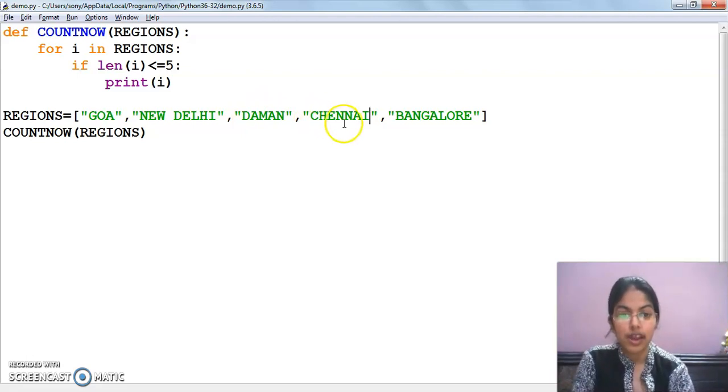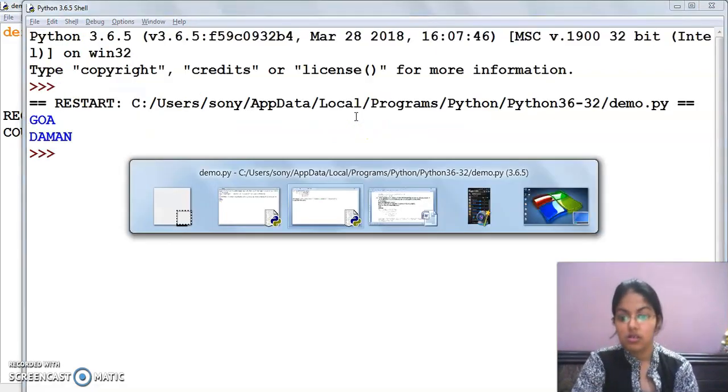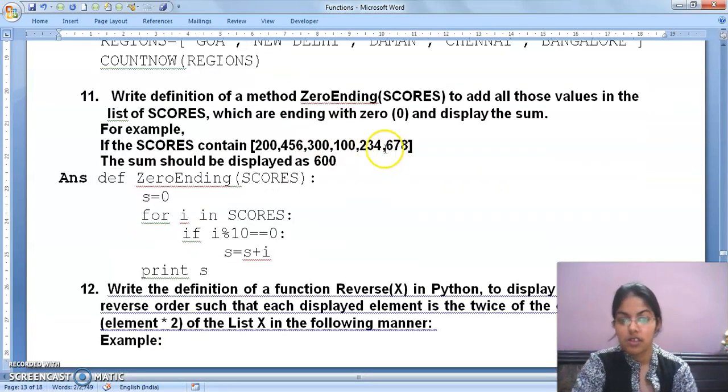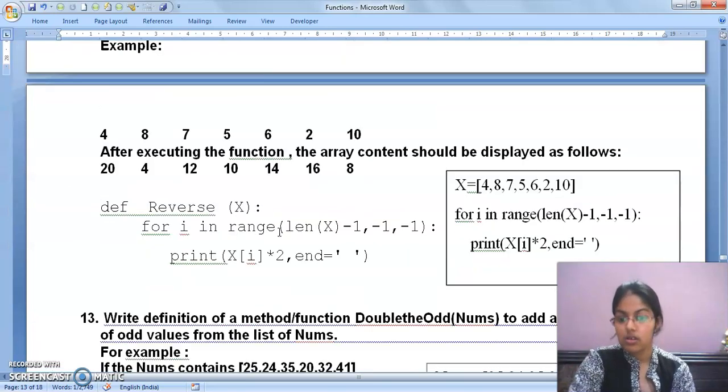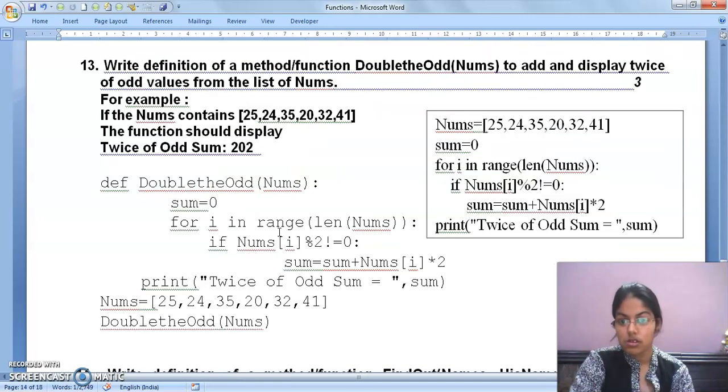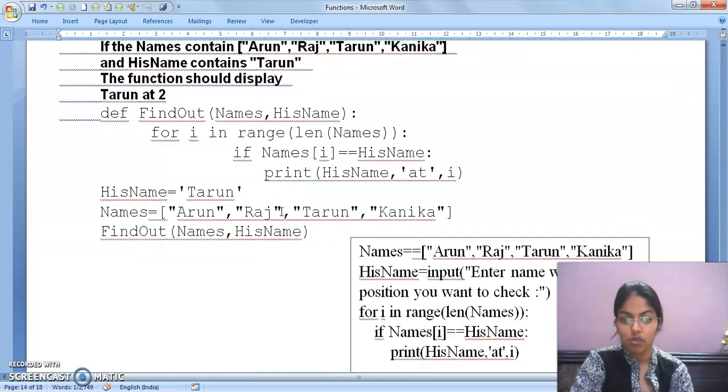Now move to the next question. This one is the same which we have done in our previous video. That one was ending with five, this one is ending with zero. So in place of five, zero will come here. Okay, so move to the next question.